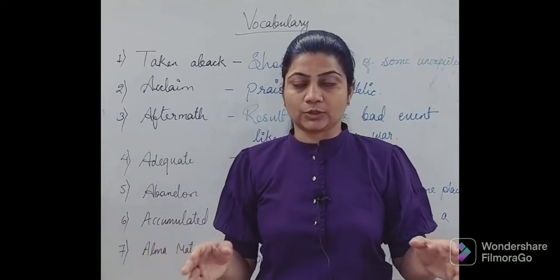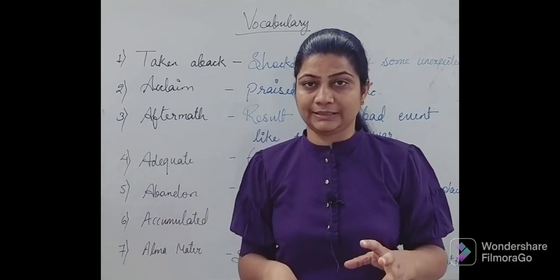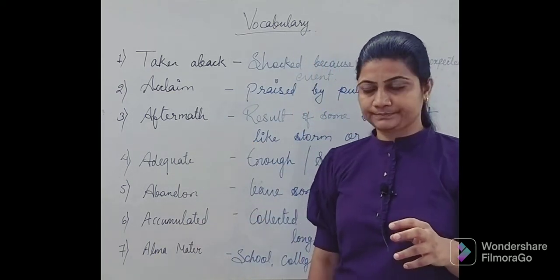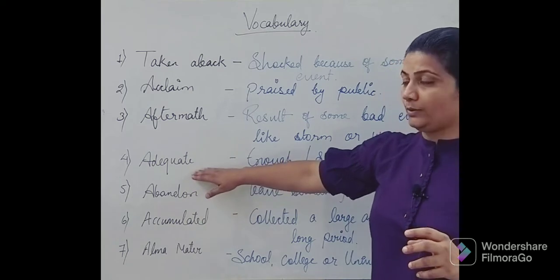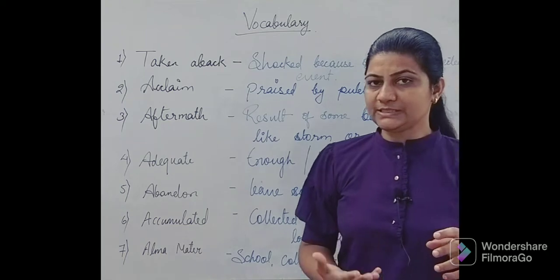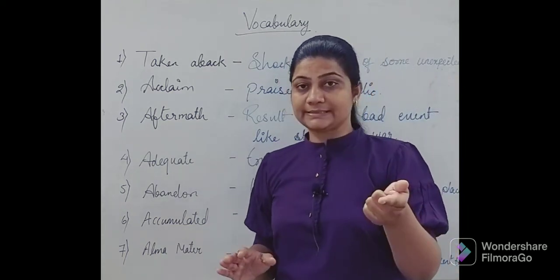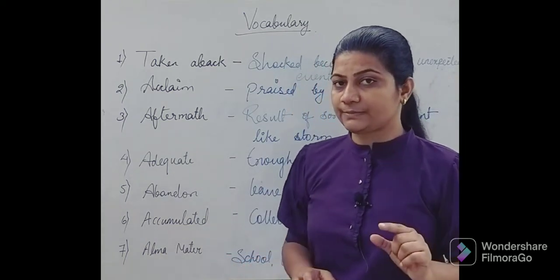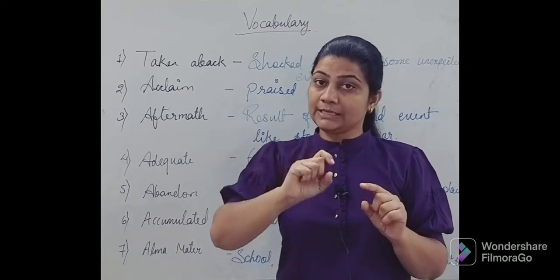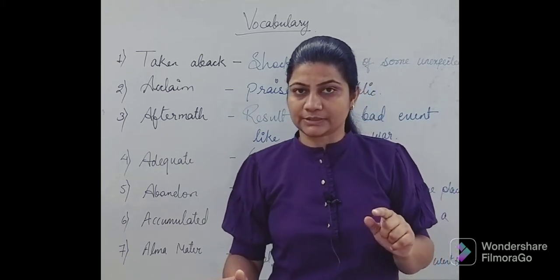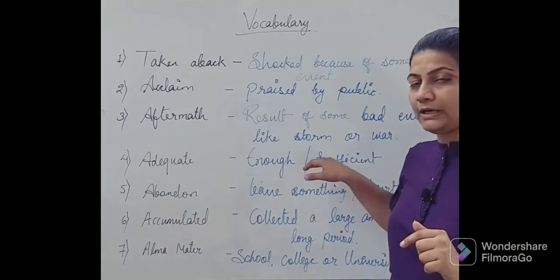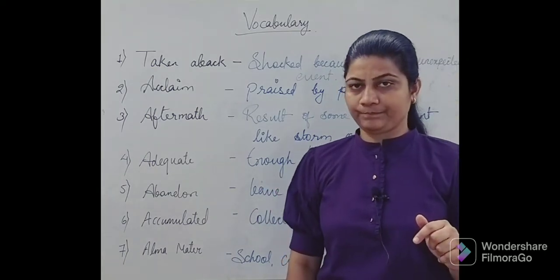When a bad event occurs, the results that follow are termed as aftermath. The next one is adequate. Adequate means enough or sufficient. When you are talking about singular or plural objects, you can use enough or sufficient.